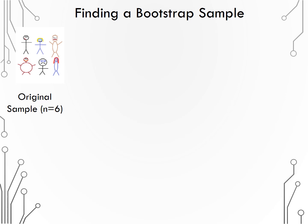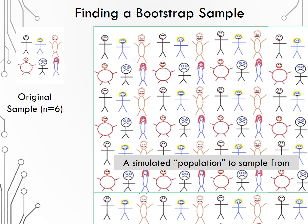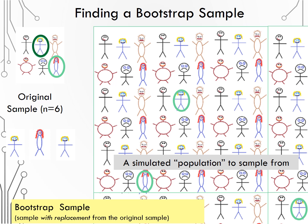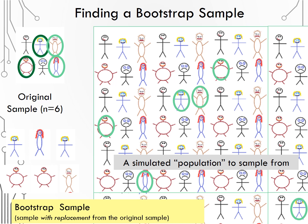Here is an example of a sample of six people. We can create a bootstrap population by creating many, many copies of this original sample. Then sampling from the bootstrap population is equivalent to sampling with replacement from the original group of six. For example, selecting the blonde stick figure from the bootstrap population is the same as selecting the blonde stick figure from the original sample. Then I could select the redhead, then the blonde again — which is legal since I used replacement, meaning after I selected the blonde as the first person, I put them back into the sample for the potential to be selected again. I can continue this process, selecting the pregnant lady twice and the angry man. Notice that the bootstrap resample is the same size as the original sample: n equals six.